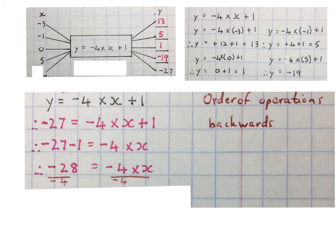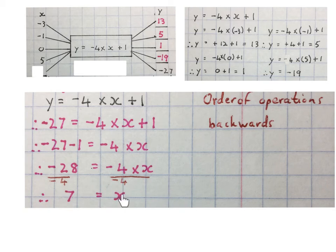Now we're going to do the opposite of times minus four. We are going to divide by minus four on both sides. You may ask yourself, minus four times what will give me minus twenty-eight? The final answer is X equals plus seven, which we can write in on the flow diagram.